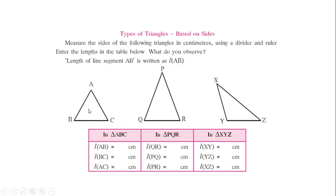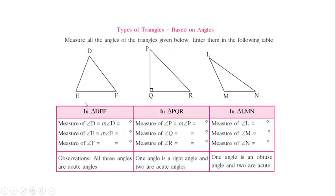These were the three types of triangles based on sides. The three types of triangles based on angle are acute angled triangle, right angled triangle and an obtuse angled triangle.